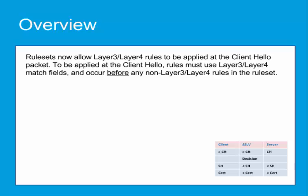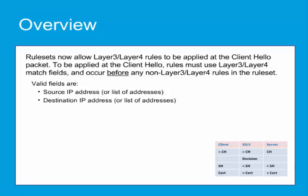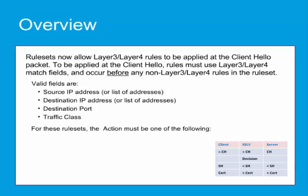These rules applied at the client hello must use Layer 3, Layer 4 match fields exclusively and occur before any non-Layer 3, Layer 4 rules in the rule set. The valid fields are Source IP Address or a List of Addresses, Destination IP Address or a List of Addresses, the Destination Port, and Traffic Class. For these rules, the action must be one of the following: drop, cut through, or reject. It is important to note that all Layer 3, Layer 4 rules must occur before any non-Layer 3, Layer 4 rules in the rule set. Once the policy reaches a rule that includes non-Layer 3, Layer 4 match fields, all subsequent rules will be applied at the server hello server certificate level.